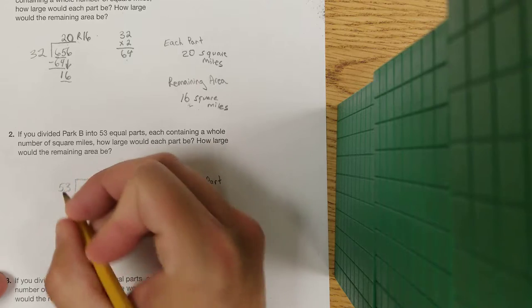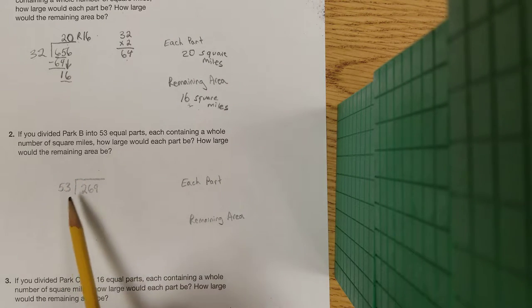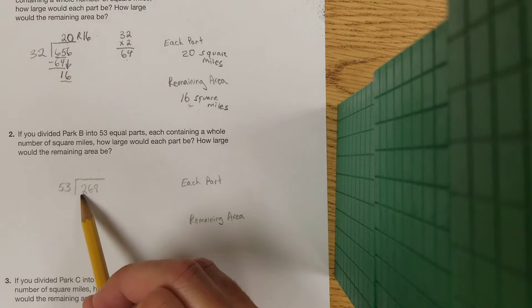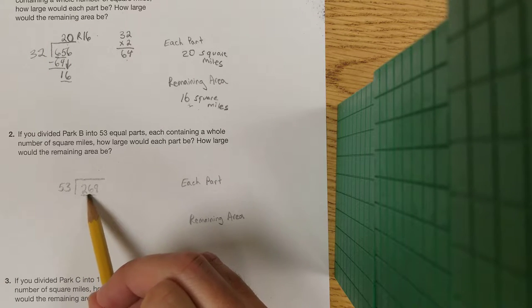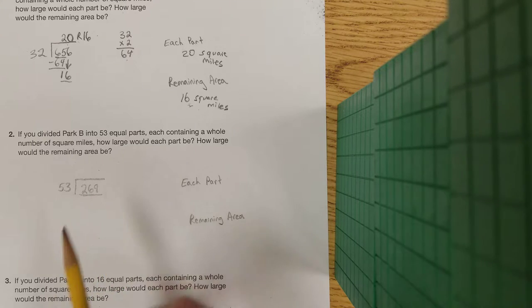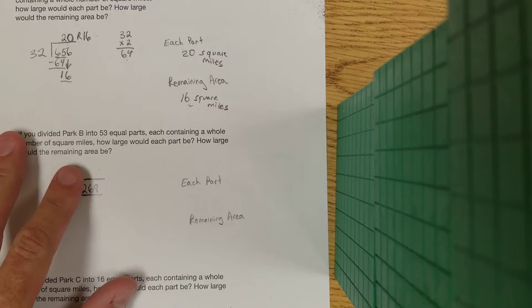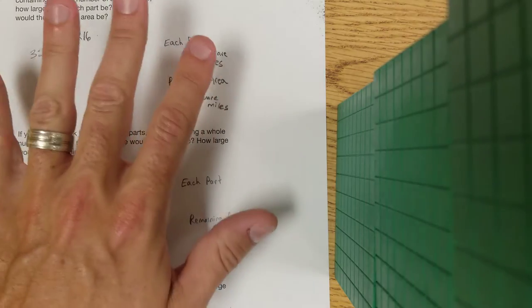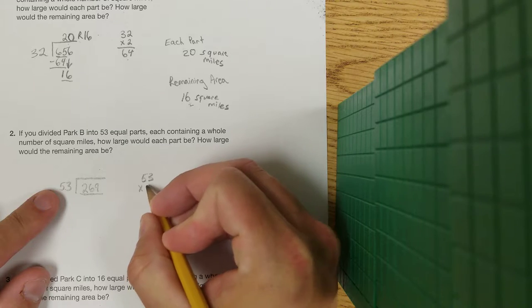So that's going to be our divisor. I'm just going to ask myself, will 53 go into 2? Nope. 26? No, 53 still larger. So we're going to have to use that full number. I'm going to just guesstimate by counting by 50s, so I got 50, 100, 150, 200, 250. That'd be five times.